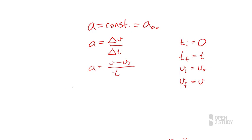And now if we rearrange this equation, which is fairly straightforward to do, I can write this as: velocity equals initial velocity plus acceleration multiplied by time.